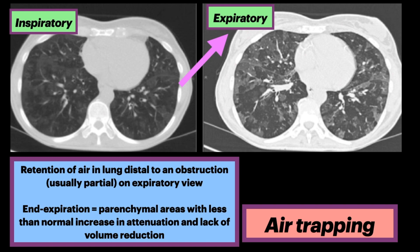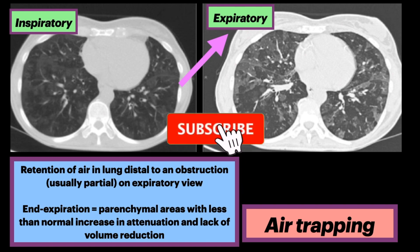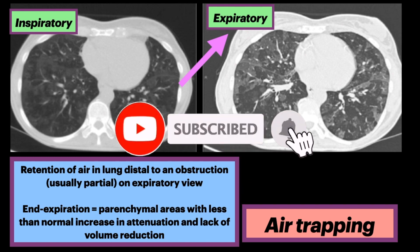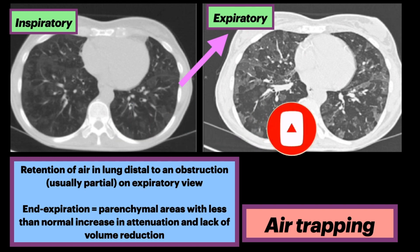Air trapping is defined as the retention of air in the lung distal to an obstruction, usually partial, and it's seen on the expiratory view. Air trapping is seen on end-expiration CT scans as parenchymal areas with less than normal increase in attenuation and lack of volume reduction. Comparison between inspiratory and expiratory scans can be helpful when air trapping is subtle or diffuse.